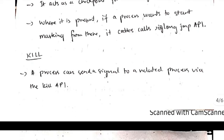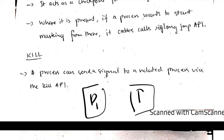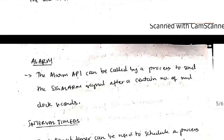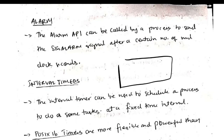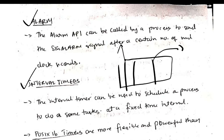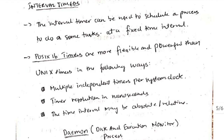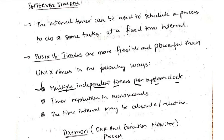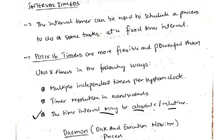If there are two processes, P1 and P2, and P1 wants to terminate P2, it can send the signal through the kill API. Alarm is used when a signal needs to be sent after a certain amount of time. For multiple signals or other timed tasks, we can use interval timers. The POSIX timer is a more flexible and powerful timer than the standard UNIX timer because it supports multiple independent timers per system clock, the timer resolution is in nanoseconds, and the timer interval may be absolute or relative.